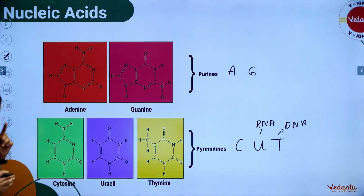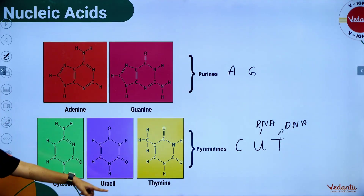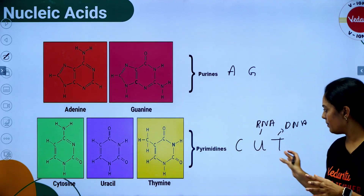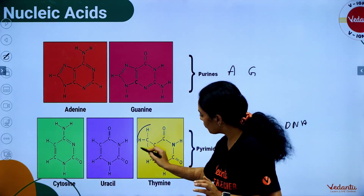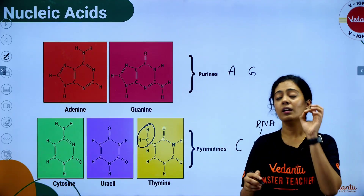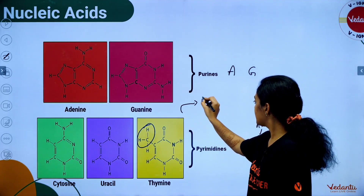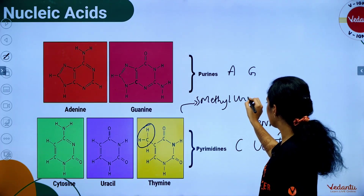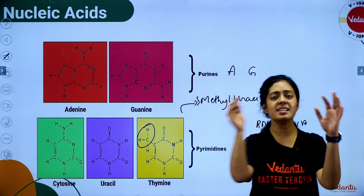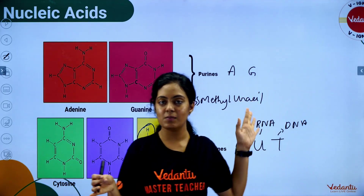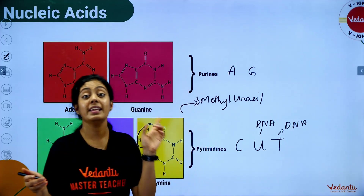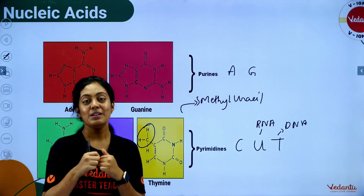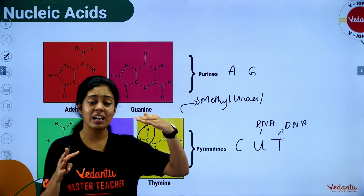Compare the structures of uracil and thymine — they are very similar. Thymine is called 5-methyluracil because it has an additional methyl group. It is a modified form of uracil. Interestingly, the first organisms millions of years ago had RNA as their genetic material — RNA was the first nucleic acid. DNA evolved from RNA because RNA was very unstable.